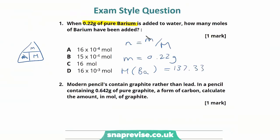We can now substitute those values back into our equation. The number of moles is equal to 0.22 divided by 137.33. And what we get is 0.0016, which is equal to 16 times 10 to the minus 4. So the answer is therefore A.